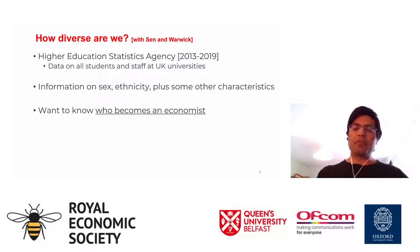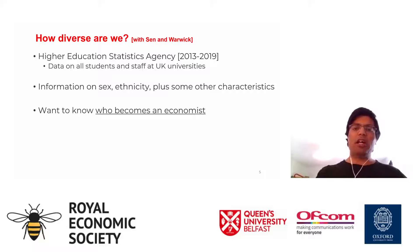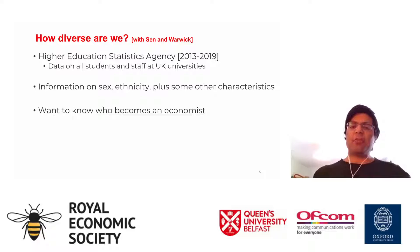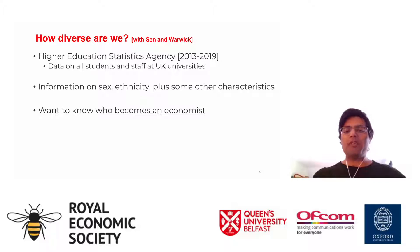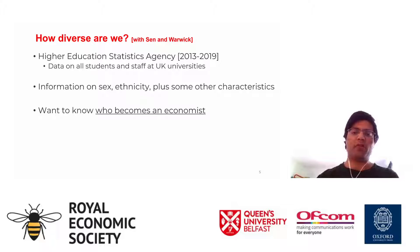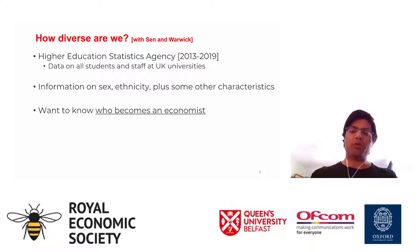With that example out of the way, I want to focus for the next 15 minutes on how diverse we are. This is work with Sonkurt Sen at the University of Essex and Ross Warwick at the IFS. We'll use data from the Higher Education Statistics Agency over a six-year period, giving access to data on all students and staff at UK universities. We'll observe sex and ethnicity — those will be the two predominant dimensions of diversity. There are clearly many dimensions to diversity, and big health warnings apply, but for today we'll focus mostly on sex and ethnicity, and a bit on private schools.